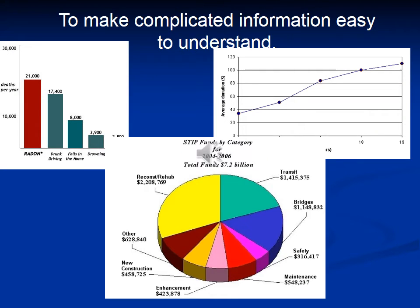And then lastly, we want to use graphics to make complicated information easier to understand. You can see all three of these charts do that. In the pie chart, you're separating out information so that somebody can quickly see what takes up the most money — for example, that one yellow segment. The line graph will show you a trend over time. And then you have the bar graph on the upper left, which allows you to compare values according to an X and Y axis.